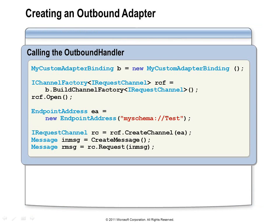The consumer of your adapter creates an instance of your binding, creates a request channel as the generic interface to call your adapter, and specifies an endpoint address including your schema and URI information. They create a message and call on the channel, which goes down through the binding — including your adapter code — and any response message comes back to the client.